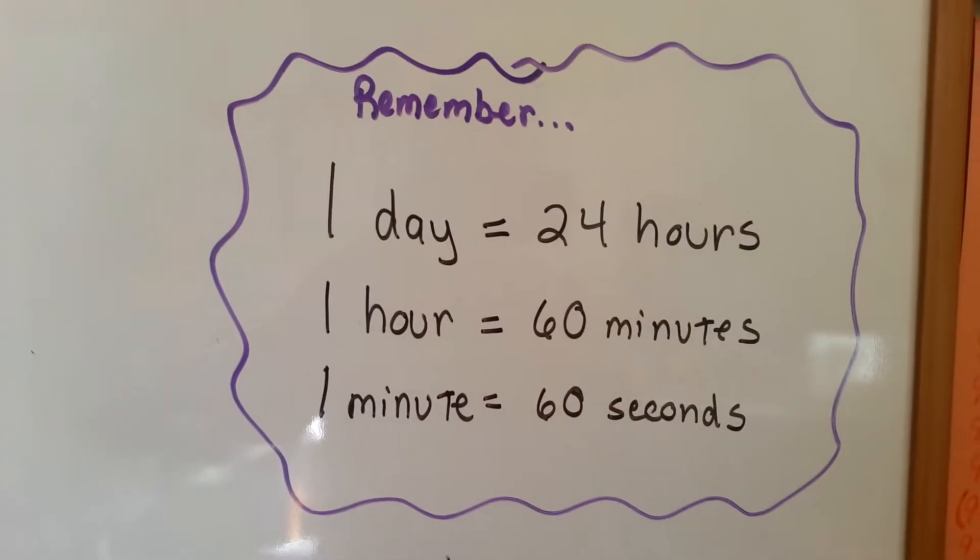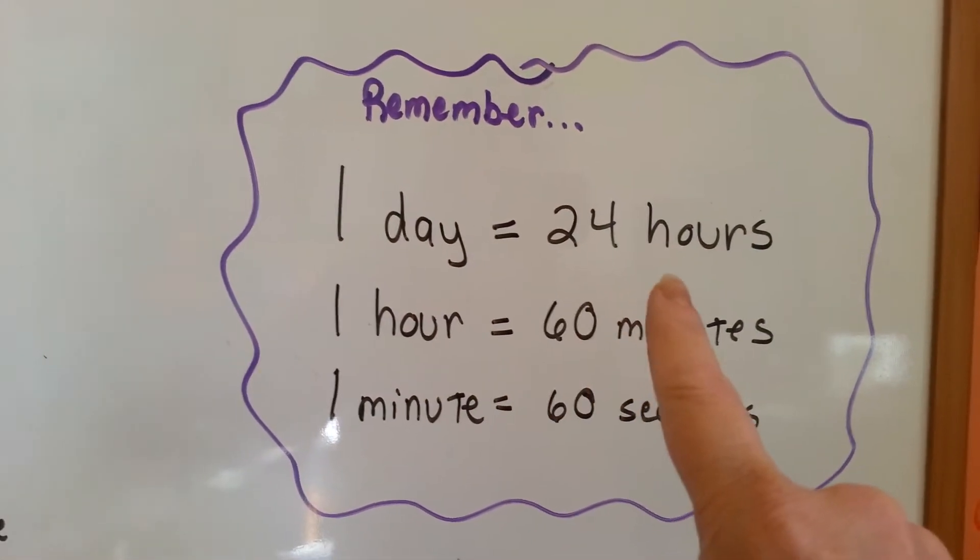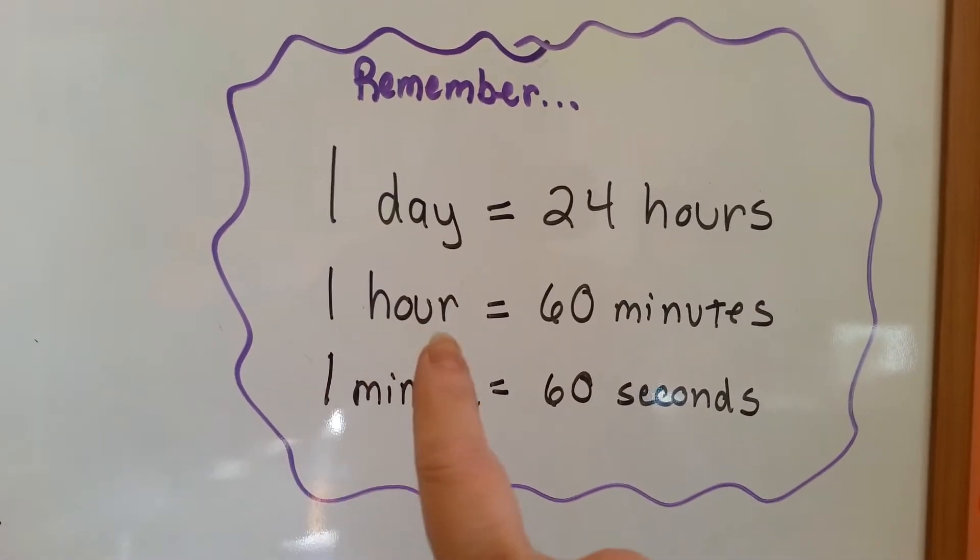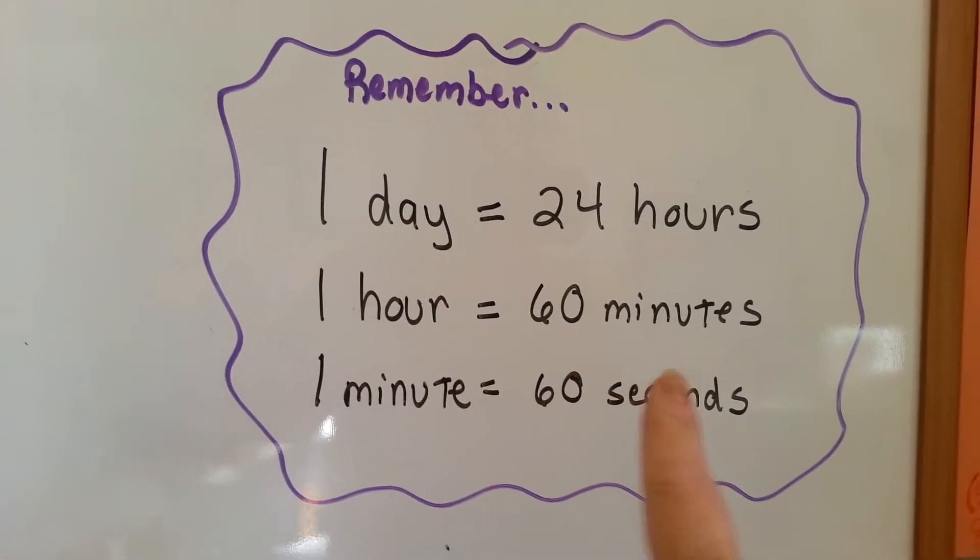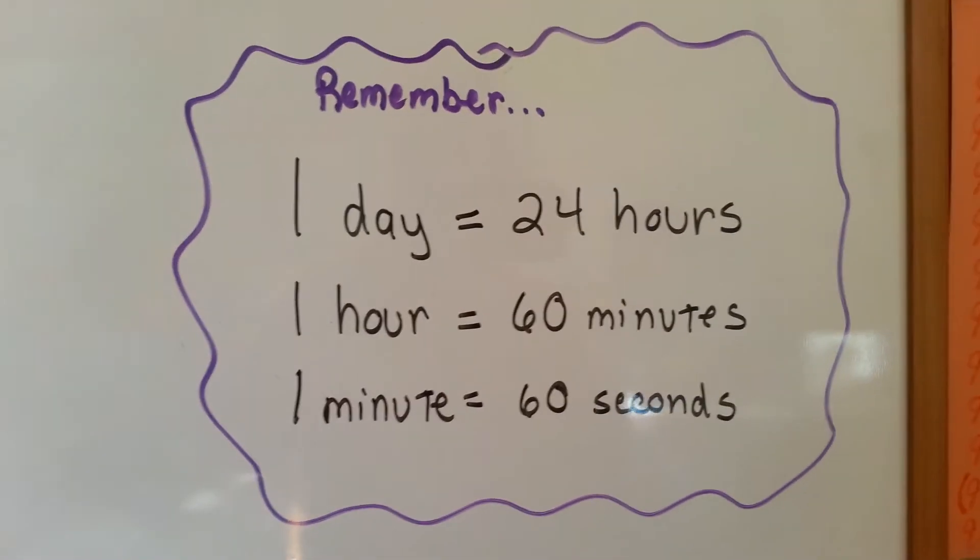So, what you need to remember is one day equals twenty-four hours, one hour equals sixty minutes, and one minute equals sixty seconds.